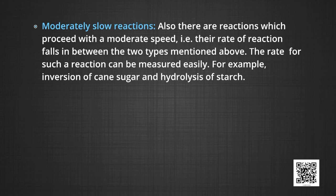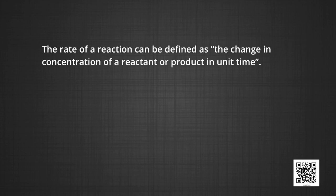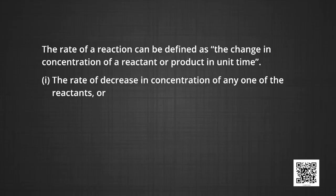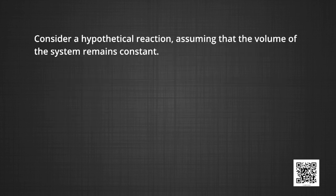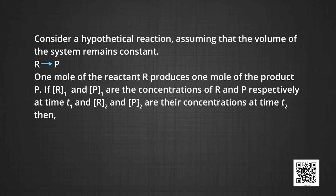You must know that the speed of an automobile is expressed in terms of change in position or distance covered by it in a certain period of time. Similarly, the speed of a reaction or the rate of a reaction can be defined as the change in the concentration of a reactant or product in unit time. To be more specific, it can be expressed as the rate of decrease in the concentration of any one of the reactants, or the rate of increase in the concentration of any one of the products. Consider a hypothetical reaction, assuming the volume of the system remains constant. R is the reactant converting into P — the product. One mole of the reactant R produces one mole of the product P.